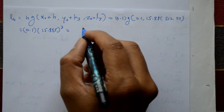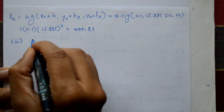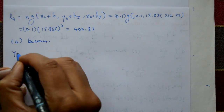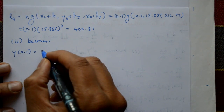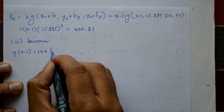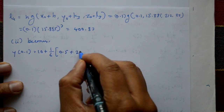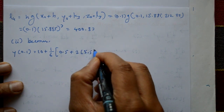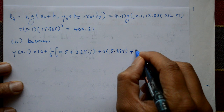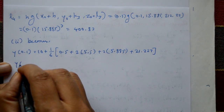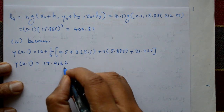Substituting into the RK4 formula: y(0.1) = y₀ + (1/6)(k1 + 2k2 + 2k3 + k4) = 10 + (1/6)(0.5 + 2×5.5 + 2×5.885 + 21.227). The required solution is y(0.1) = 17.4162.